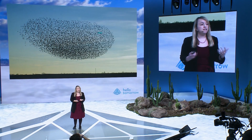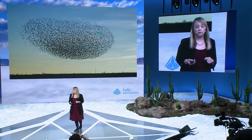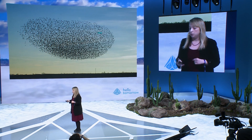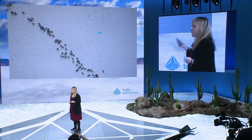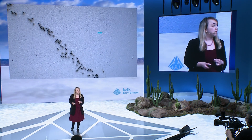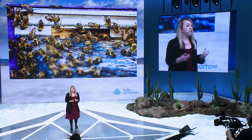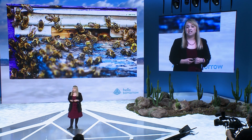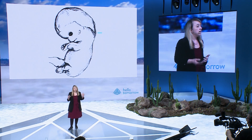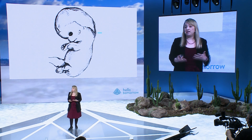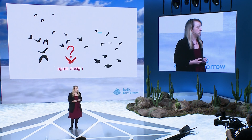We see examples of swarming all around us. We see it in ants as they create these trails to your picnic table. We see it in bees as they make decisions for their next nest site. And we are entirely self-organized systems.